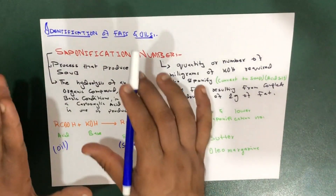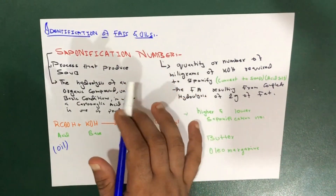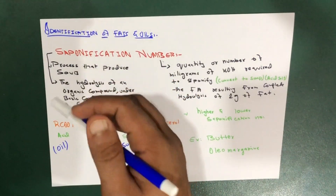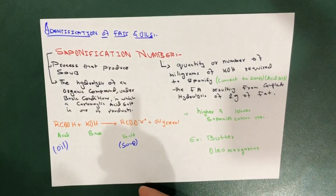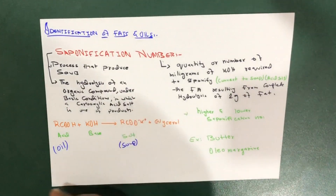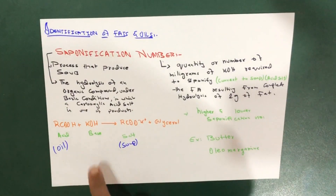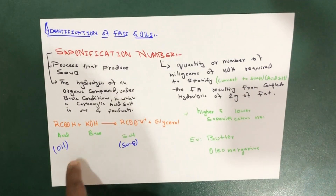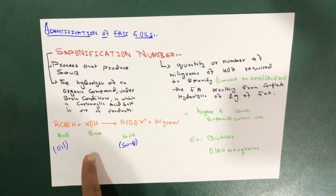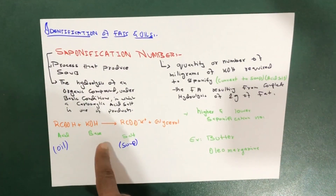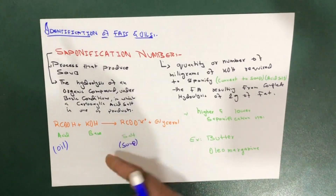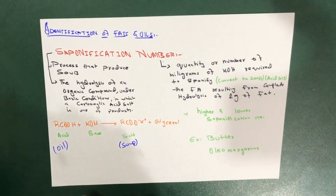And the byproduct is glycerol, which is an alcohol. So saponification is a process in which soap is produced — it's the hydrolysis of an organic compound, that is the fatty acid, which reacts with a base, which is potassium hydroxide.